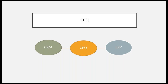Previously, variant configuration in SAP ERP was also available and this functionality is present in SAP CPQ as well. However, the SAP ERP variant configuration solution lacks the powerful cloud-based capabilities offered by SAP CPQ. The quote creation process is quite complex and not user-friendly in SAP ERP variant configuration.